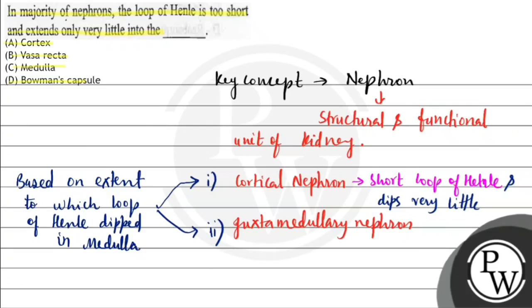Juxtamedullary nephron has longer loop of Henle which are seen to run deep in the medulla.